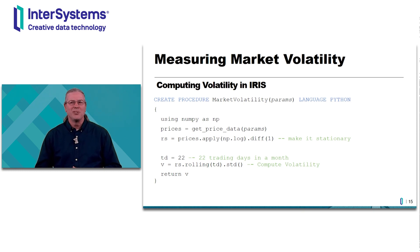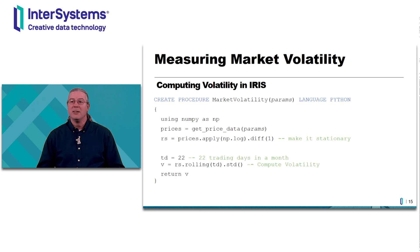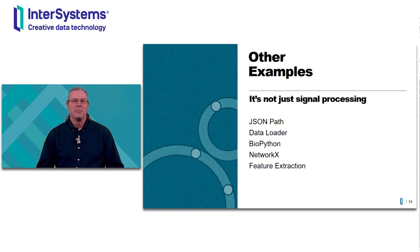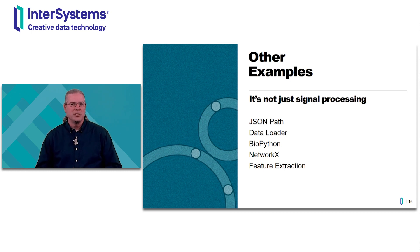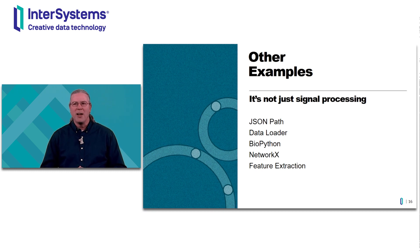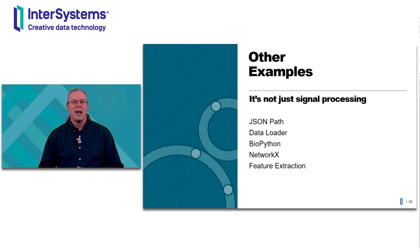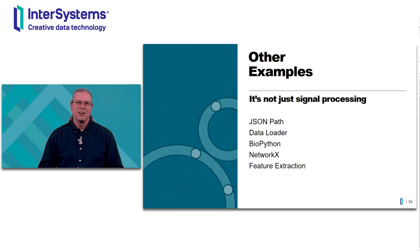You could also pull out your old differential equations book and use other non-linear dynamics. And of course there's machine learning — you may have heard that IRIS has integrated machine learning features. So some other examples: it's not just signal processing. You could use JSON path to extract data from JSON documents, build your own custom data loader, use bioinformatics libraries like BioPython to slice or mutate a genetic sequence, and NetworkX provides a truly impressive library for working with graph data — say you wanted to compute betweenness or optimize a route. And whenever you're working with images, there are a host of opportunities for feature extraction. For all of these cases, Embedded Python will help you get the job done faster.